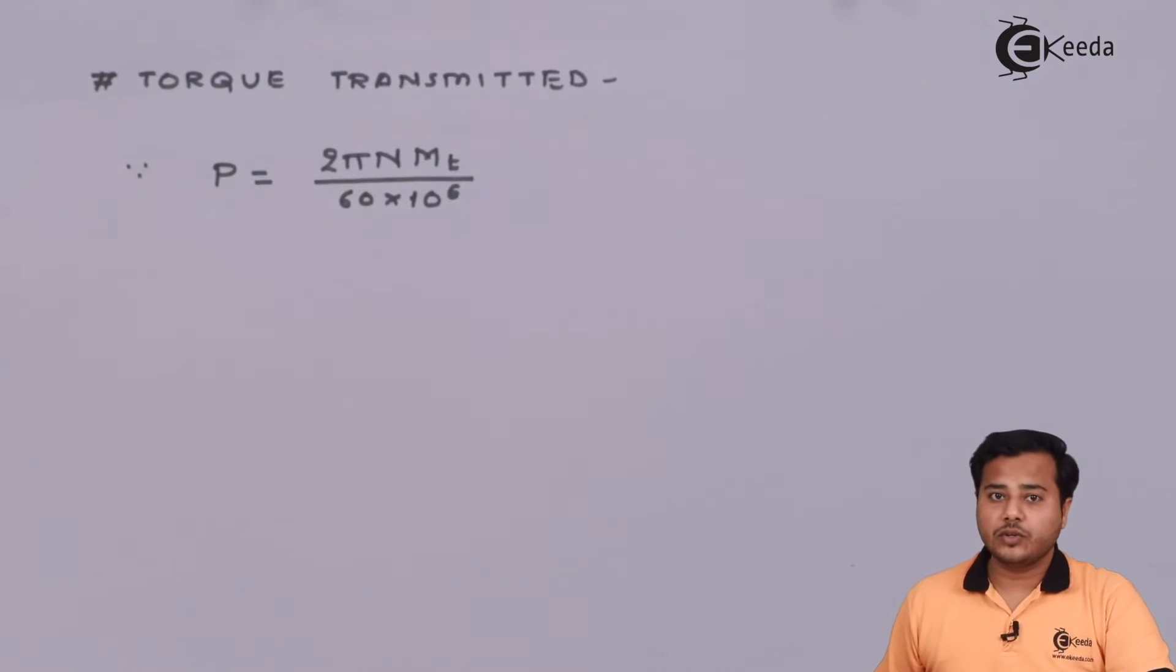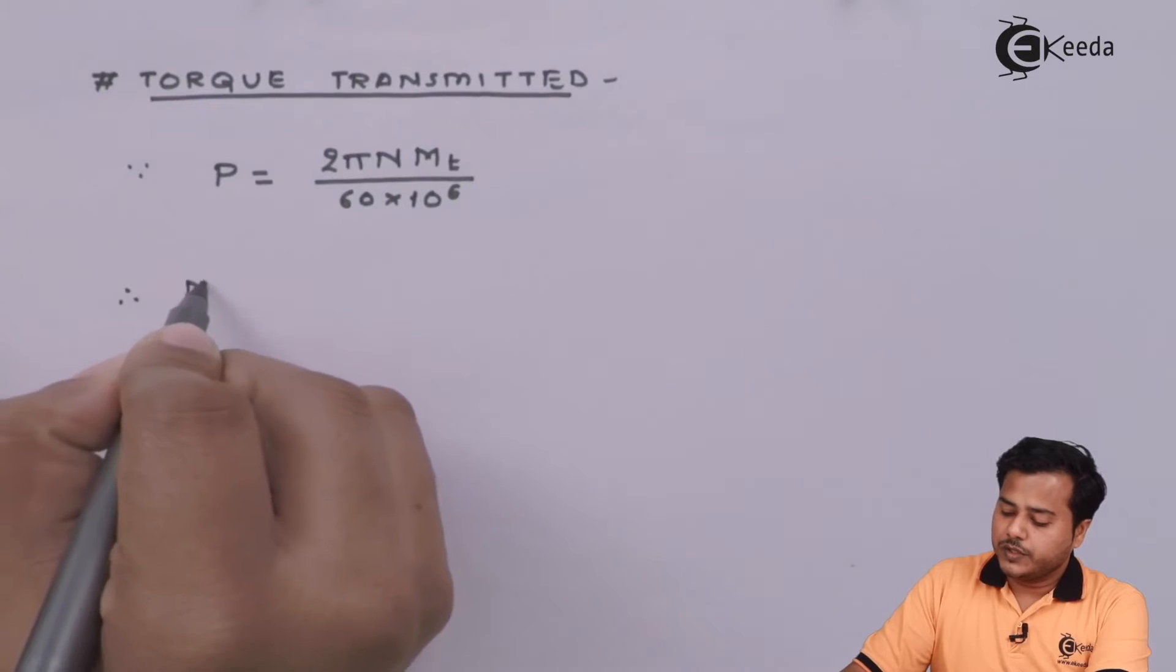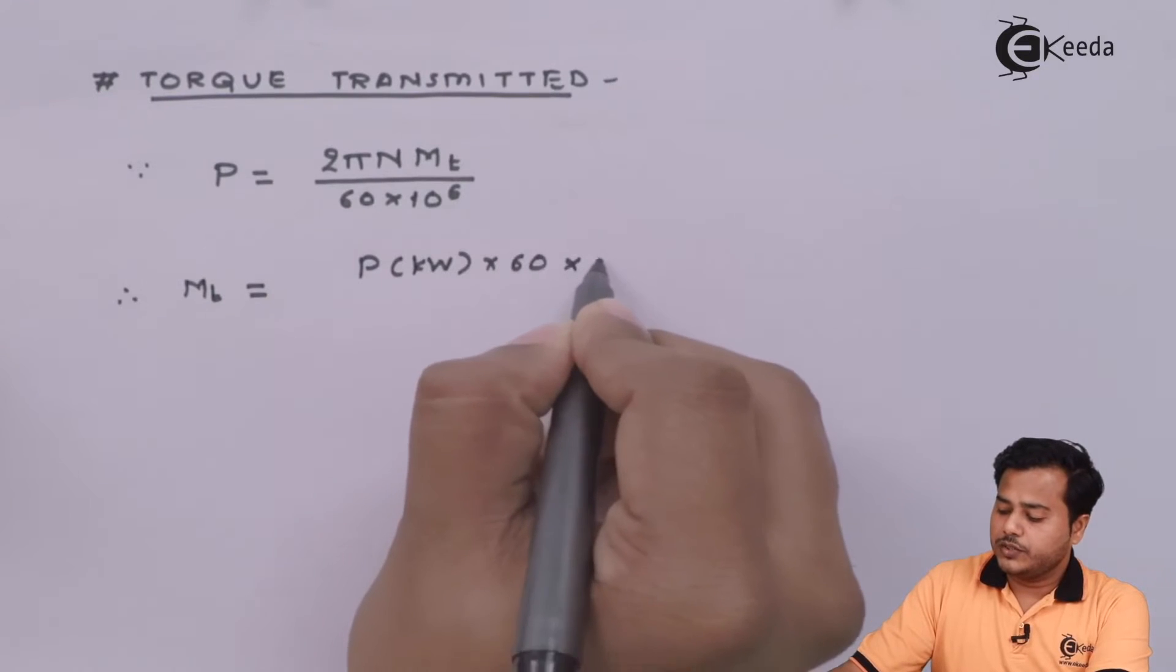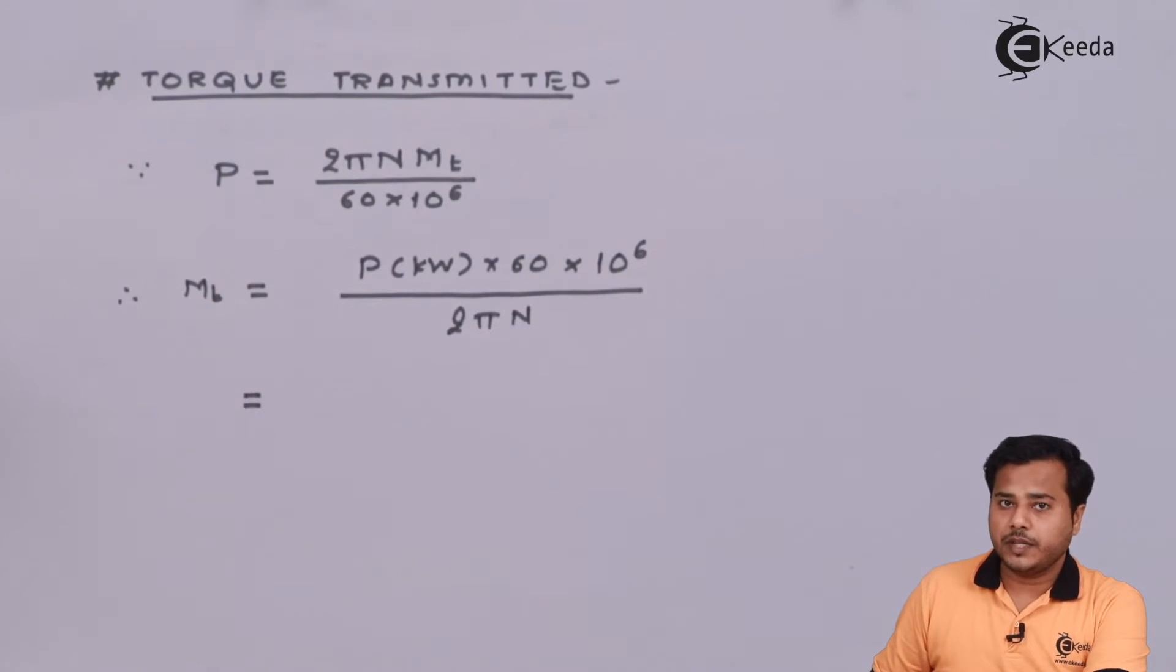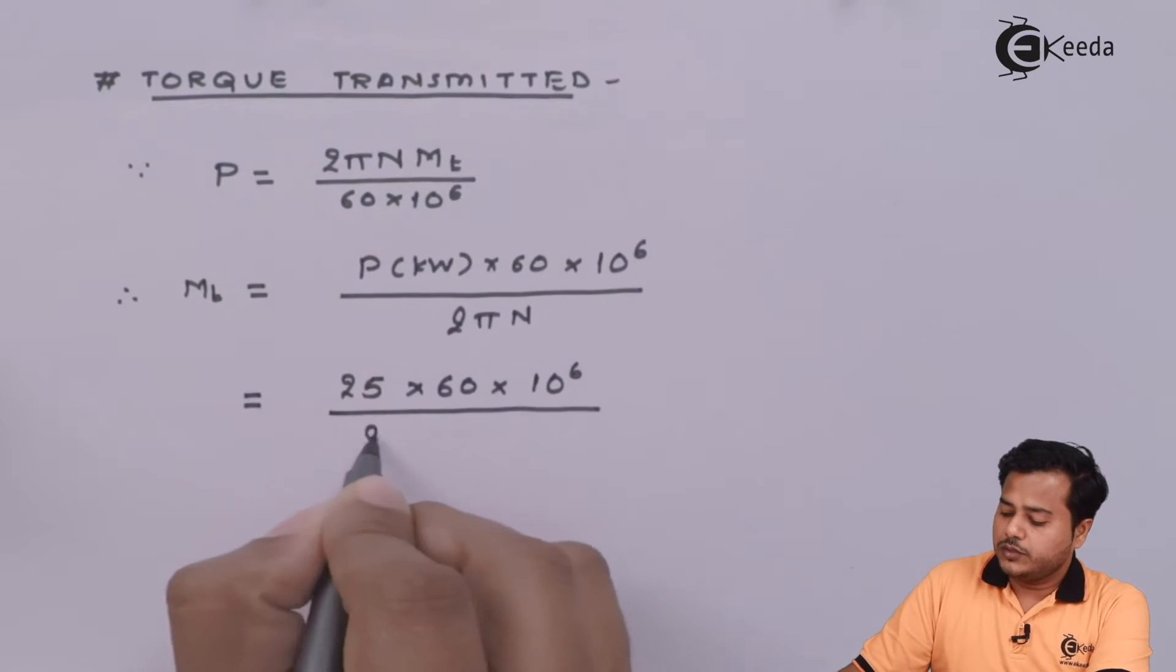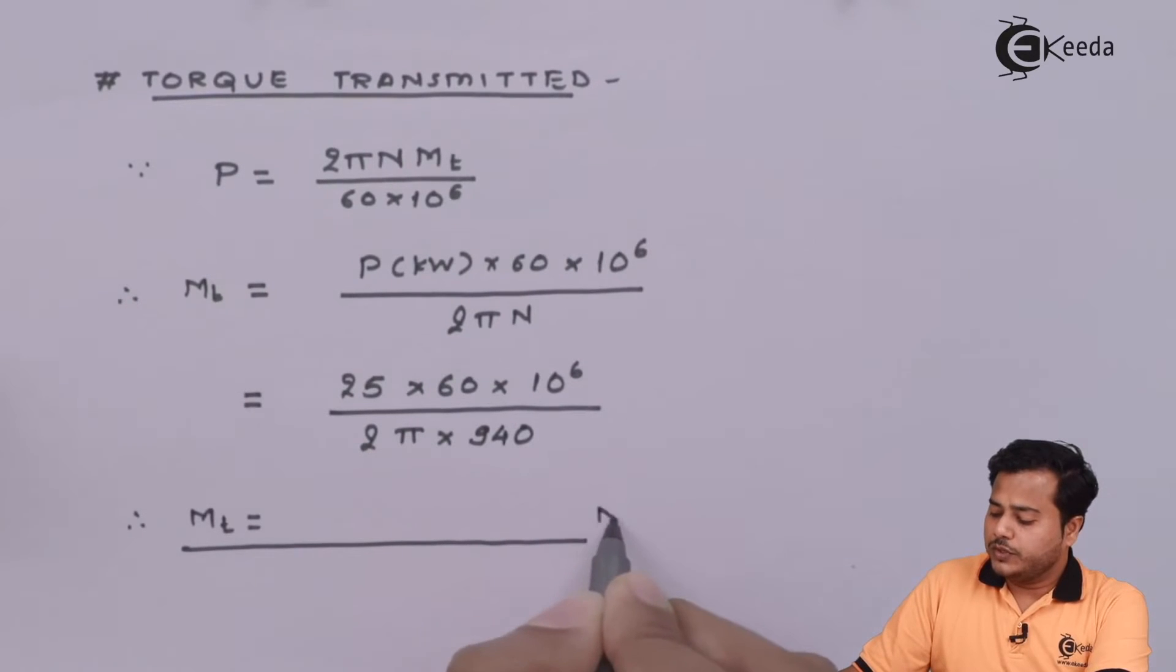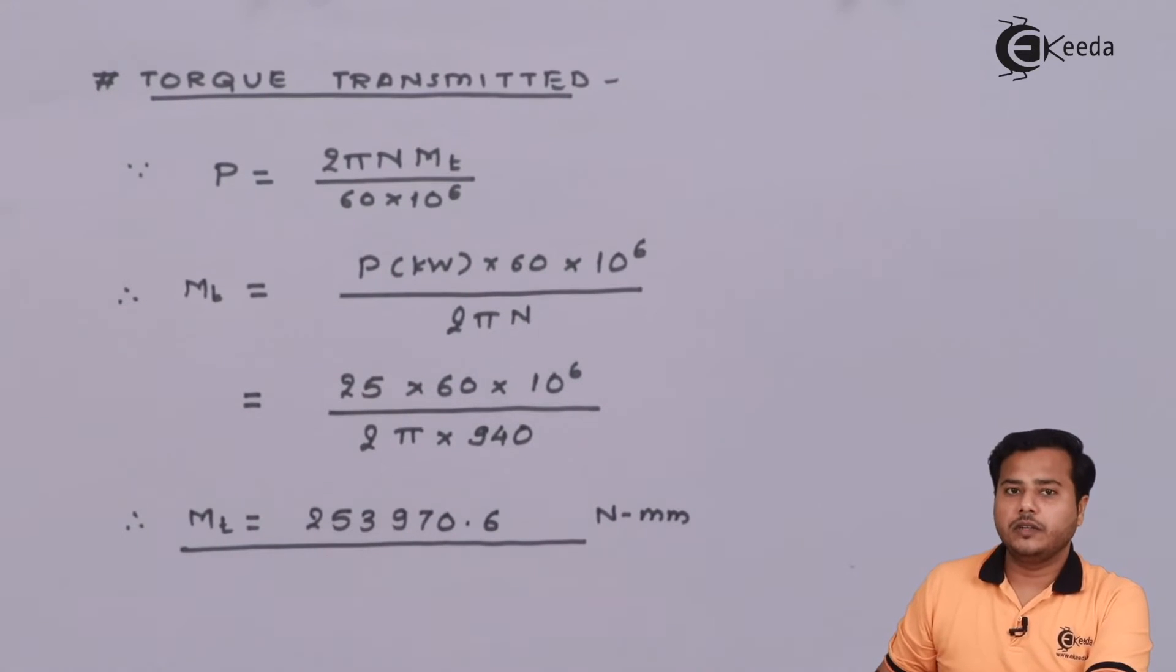The next very important thing is torque transmitted. We know this standard formula: torque transmitted MT is given by power in kilowatt times 60 times 10^6 divided by 2πN. As we substitute the values, 25 times 60 times 10^6 divided by 2π times 940 rpm. Therefore, the value of torque in Newton millimeter comes out to be around 254,000 N·mm.